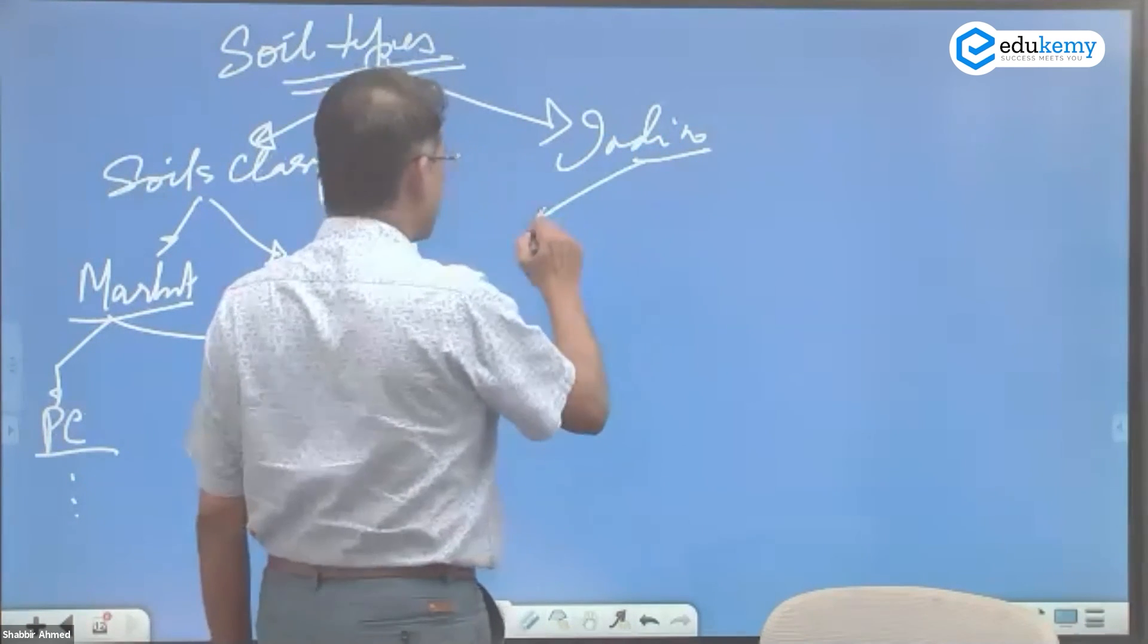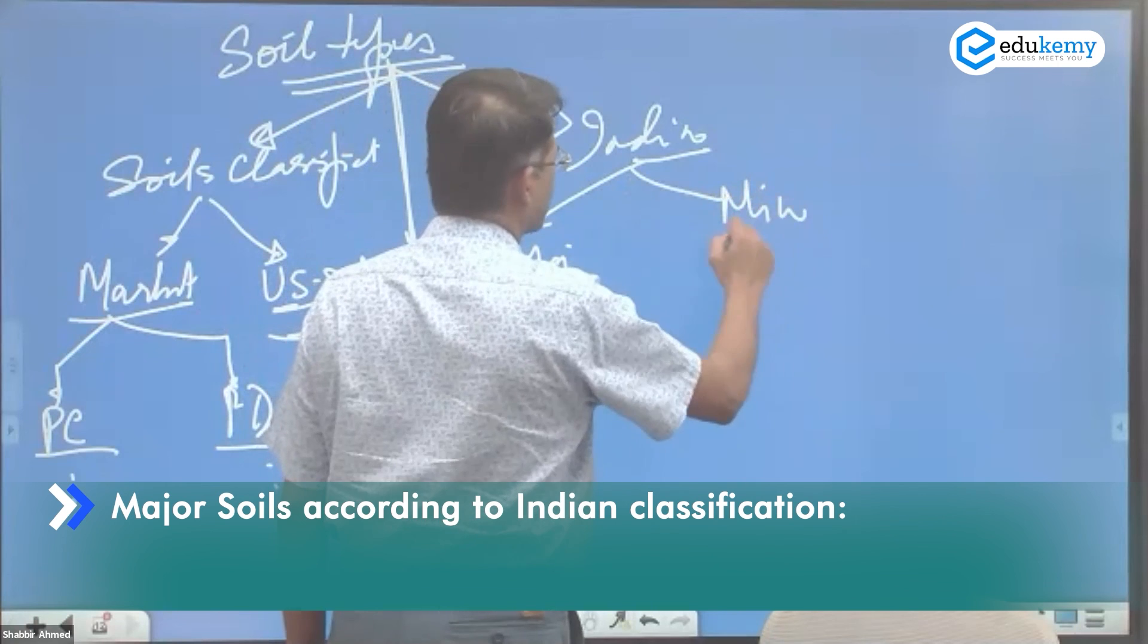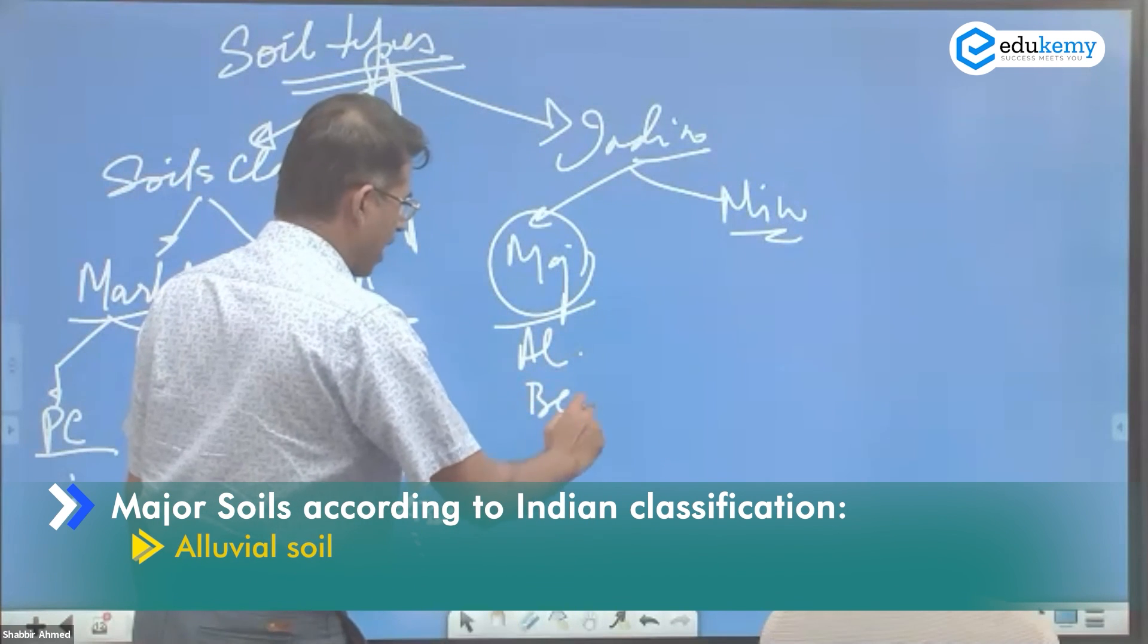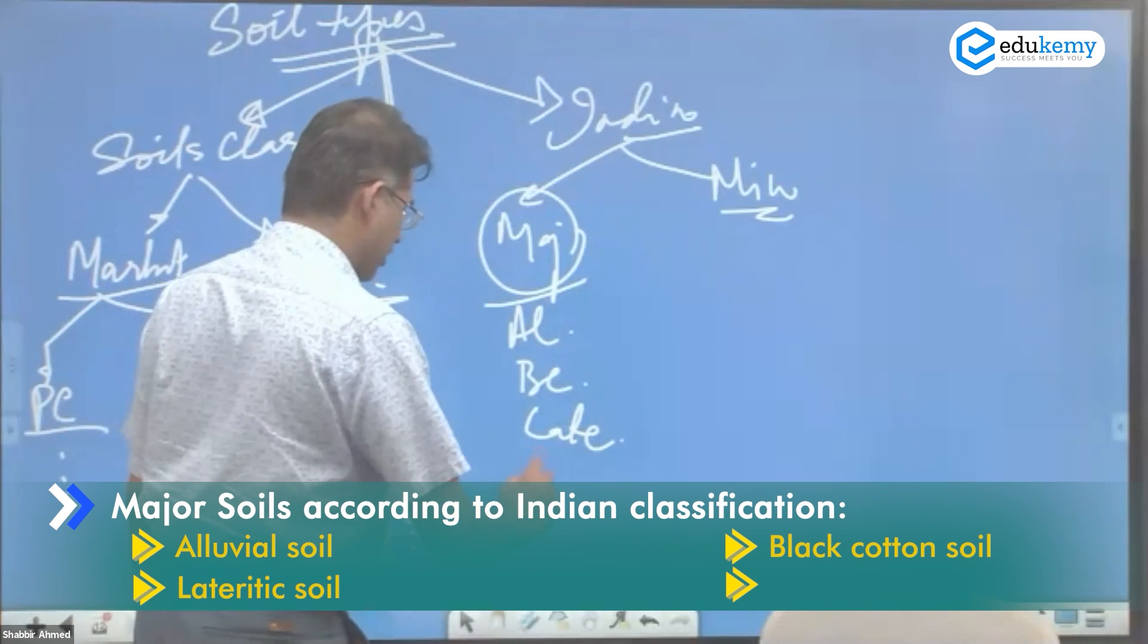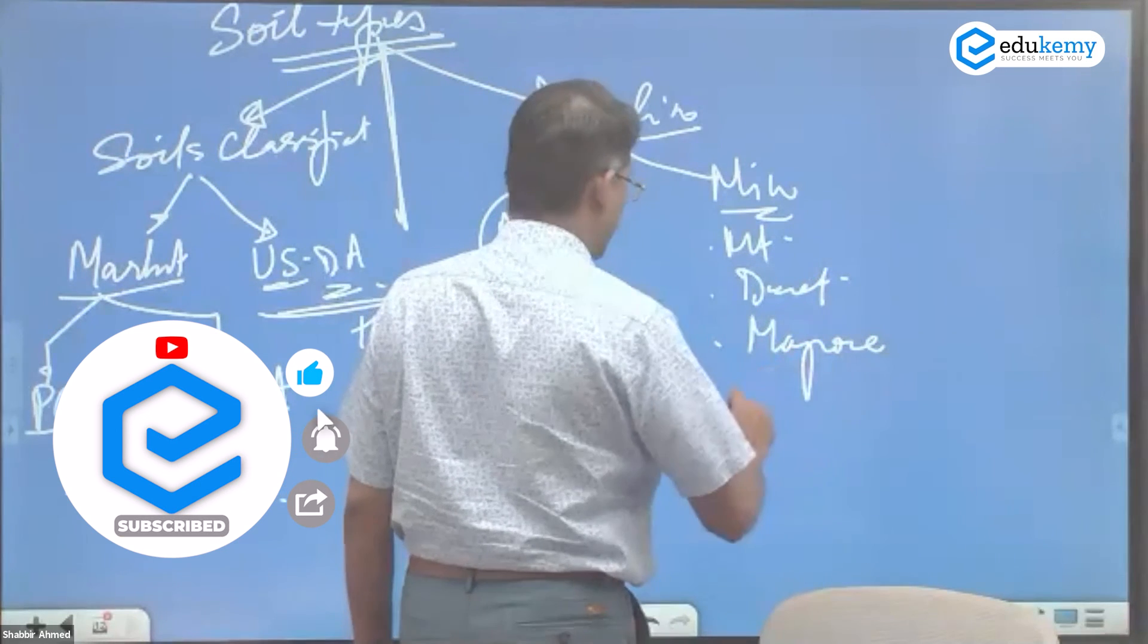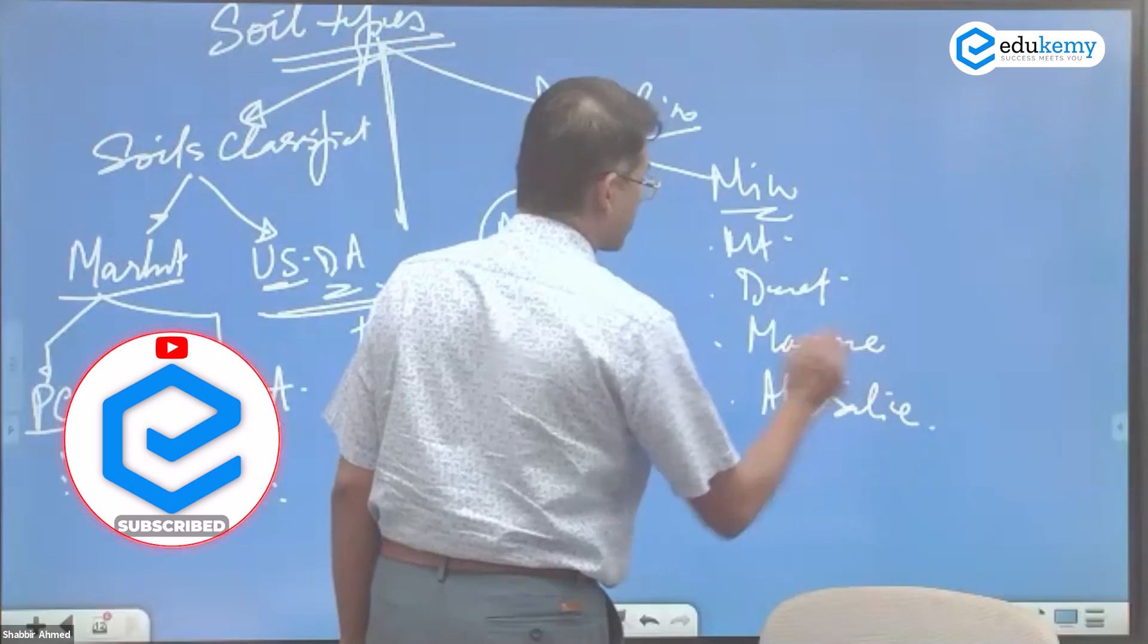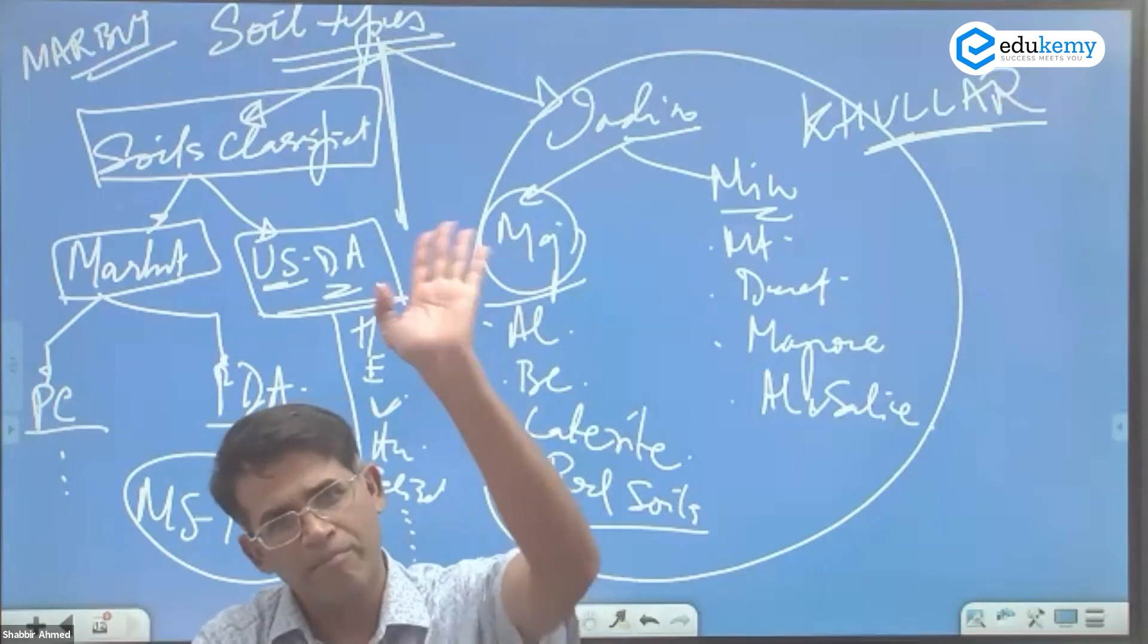And the second is the Indian scheme. There are major soils and there are minor soils. Major soils: Alluvial soil, black cotton soil, lateritic soil, red soil. Minor soils: Mountain soils, desert soils, mangrove soils, and alkaline and saline soils. I hope this schematic is ready with you. Bye-bye.